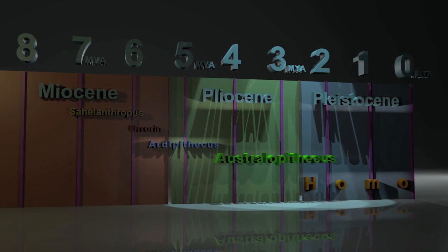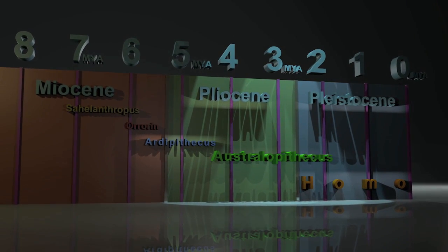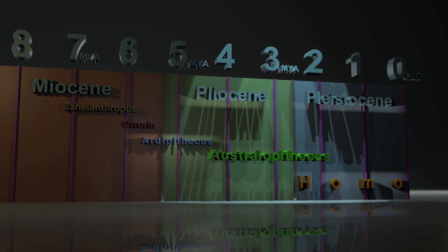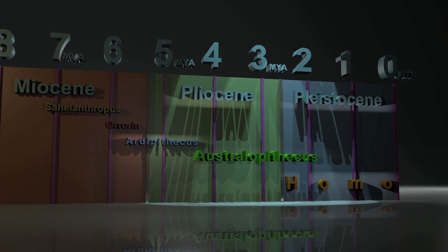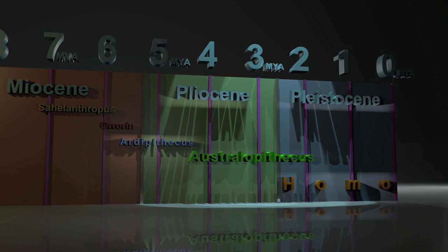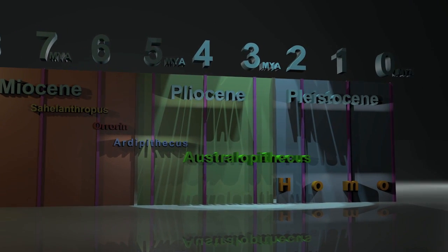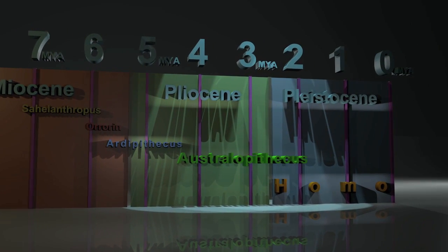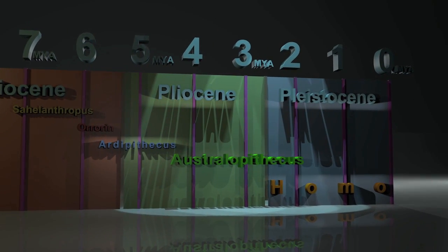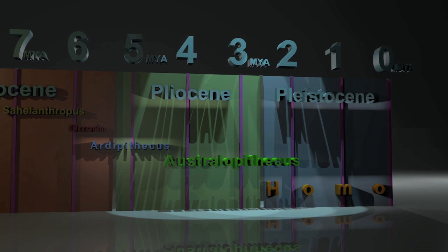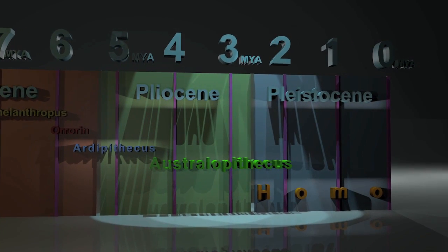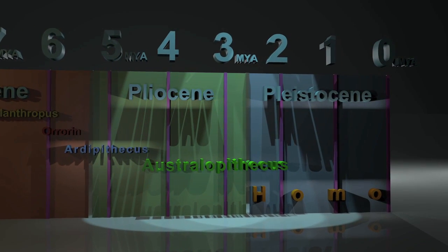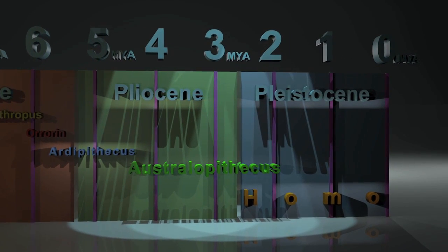With Ardipithecus kadabba at around 5.6 million years in the past, we begin to leave the Miocene epoch and move into the Pliocene epoch at 5.3 million years in the past. Ardipithecus ramidus moves us well into the Pliocene epoch at around 4.4 million years in the past.